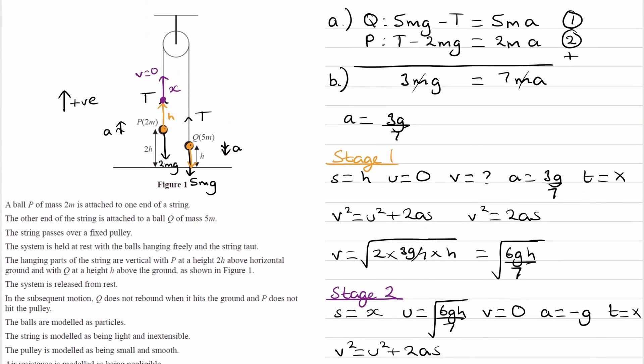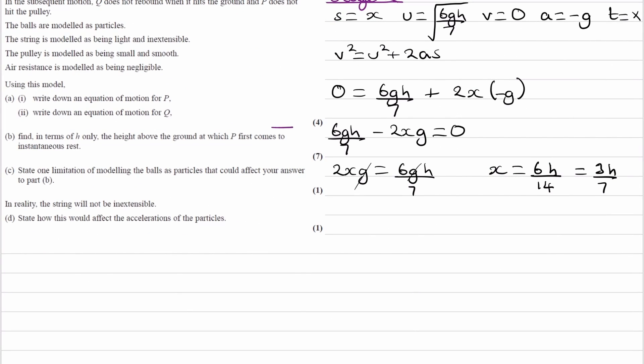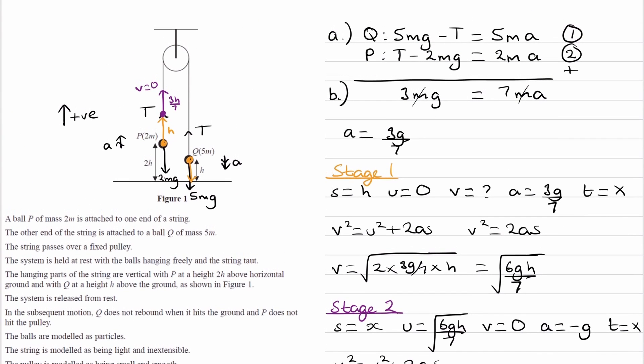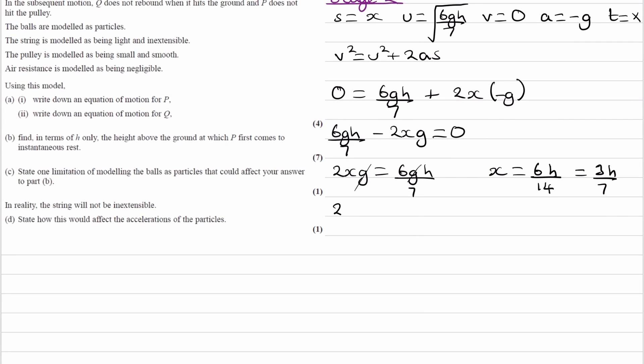So let's put that on our diagram. So the purple distance, that's the distance for stage 3, that would be 3H over 7. And the question is asking us to find the height above the ground at which P first comes to instantaneous rest. So let's look at the diagram again. It's 2H plus H plus 3H over 7. That will be our answer. So 2H plus H plus 3H over 7, and that will be 24H over 7. So that will be our answer to part B.